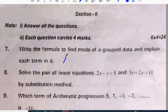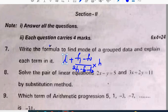We will move to section two. In section two we have six questions, no choice, each question carries four marks, 24 marks. Seventh question: write the formula to find mode of grouped data and explain each term in it. L plus (f1 minus f0) by (2f1 minus f0 minus f2) into h. L is the lower limit of the modal class, f1 is the frequency of modal class, f0 is the preceding frequency of the modal class, f2 is the succeeding frequency of the modal class, h is the class width.